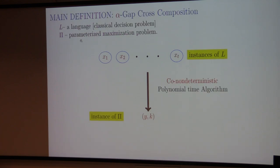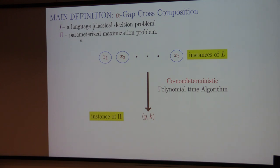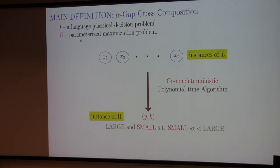Now we want to move to the definition of alpha-gap cross-composition. It is pretty much similar to cross-composition but with a small difference. You start with a language L, which is a decision problem, and pi is a parameterized maximization problem. An alpha-gap cross-composition is a polynomial time algorithm — it can be co-nondeterministic — that outputs an instance of our parameterized maximization problem pi.